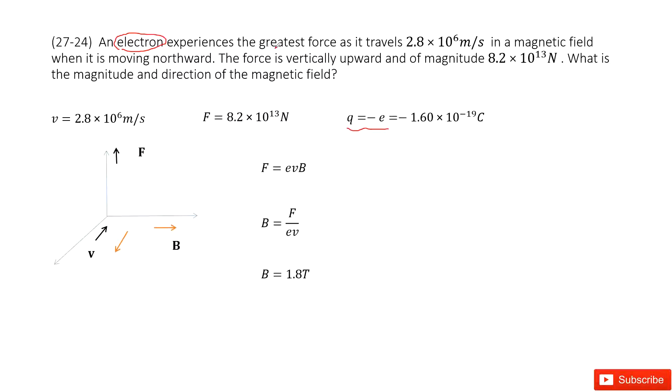And then the greatest force acts on it when it travels in a magnetic field is 2.8 times 10 to the power 6 meters per second. So this gives us the velocity.